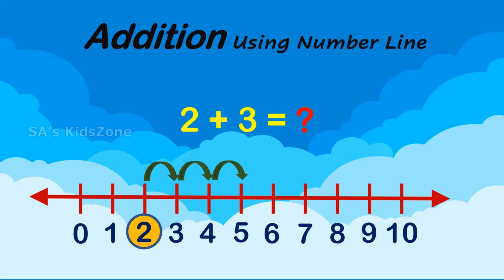kids, tell me, which number do we get after jumping 3 numbers? Yes, very good. It's number 5, which is the answer. Therefore, 2 plus 3 is equal to 5.